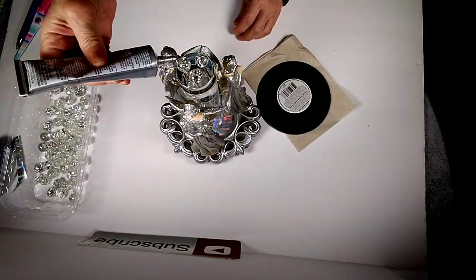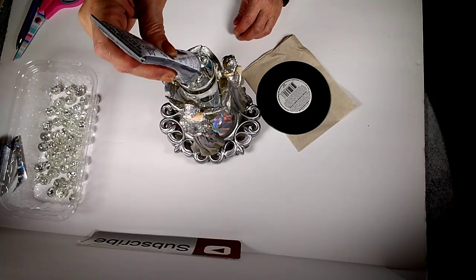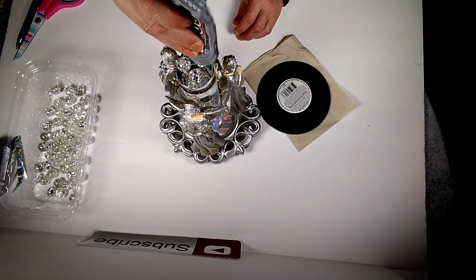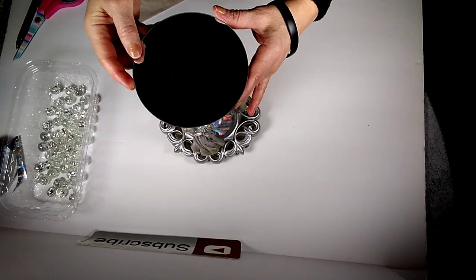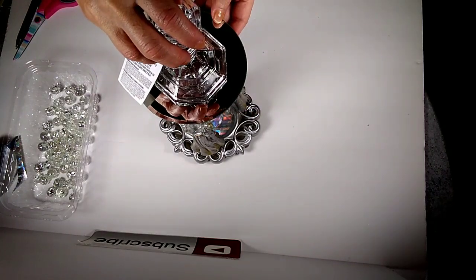Now using the strong adhesive, I am going to put a dab, a generous dab, on each of those marbles, and then I'm going to place my mirror on top. Then I take a candlestick and I place it on top so that it could weigh it down while it dries.